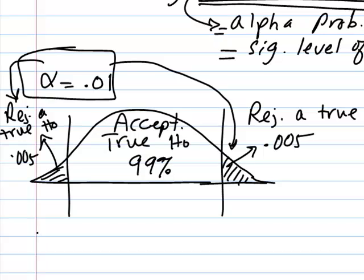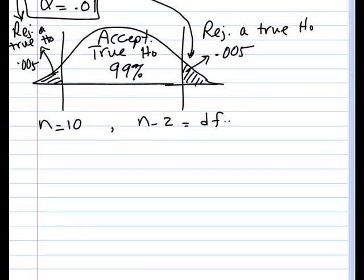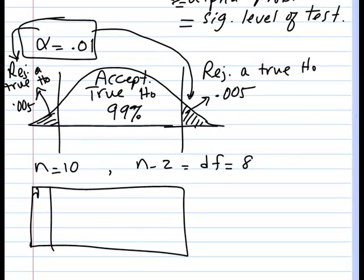We know our alpha divided by 2 is 0.005, and in this example, our sample size n is 10. So n minus 2, which is our degrees of freedom, equals 8. So in our table, in our t table at the end of the book, you will see that if you look up degrees of freedom and you go down to 8, and you go across the 0.005, which is the last column entry for this table.